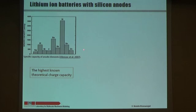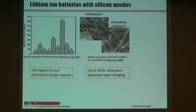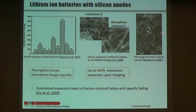Why lithiated silicon? In lithium-ion batteries we currently use carbon as the anode, but if you use silicon you will have the highest known theoretical charge capacity. The problem is that if you lithiate silicon you will have a huge volumetric expansion — 400% — and it will immediately phase-change to amorphous. This huge volumetric expansion leads to crack initiation and crack propagation, and after a few cycles of charging and discharging the capacity fades and the battery will not work anymore.